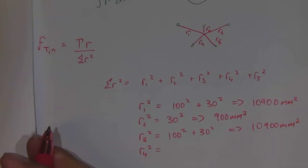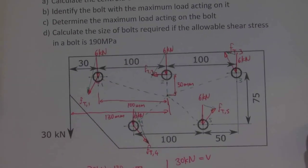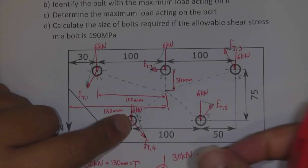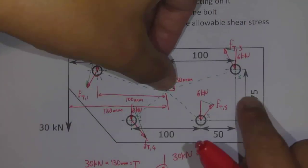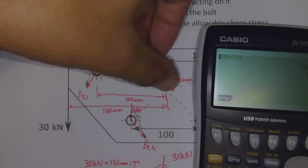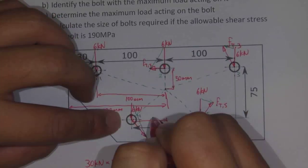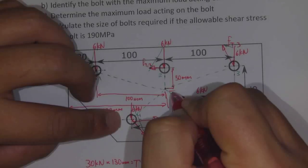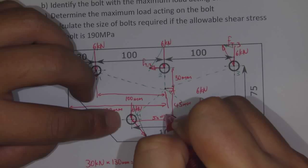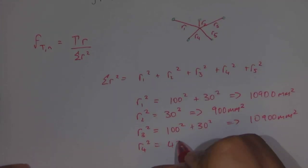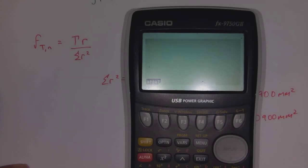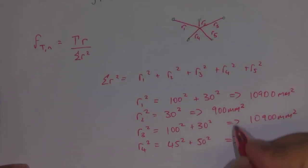R4 squared. Here's our diagram, and there's bolt number four. Bolt number four has got this height here, which would be equal to 75 minus 30, which is 45. That distance there is equal to 45. And then this one here would be equal to 50. We can get 45 squared plus 50 squared, and then that will get us the hypotenuse value squared. And that's 4,525 millimeters squared.